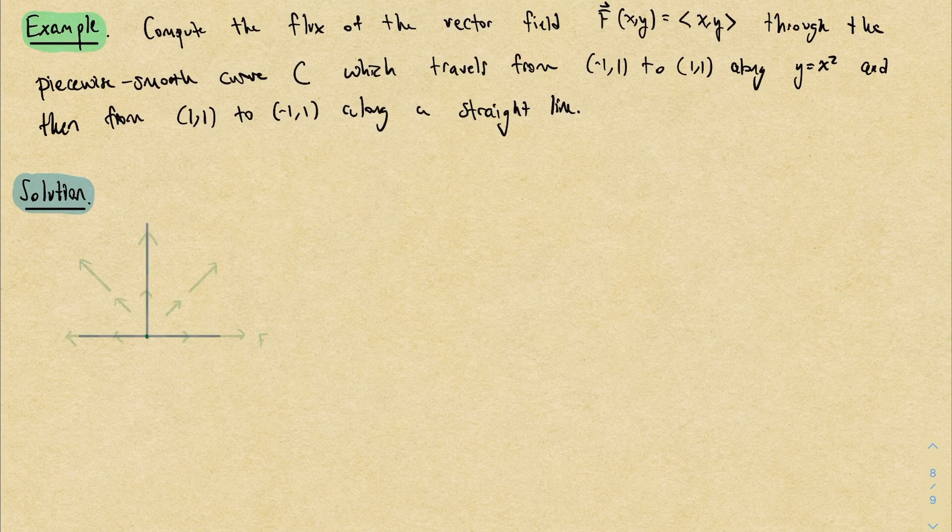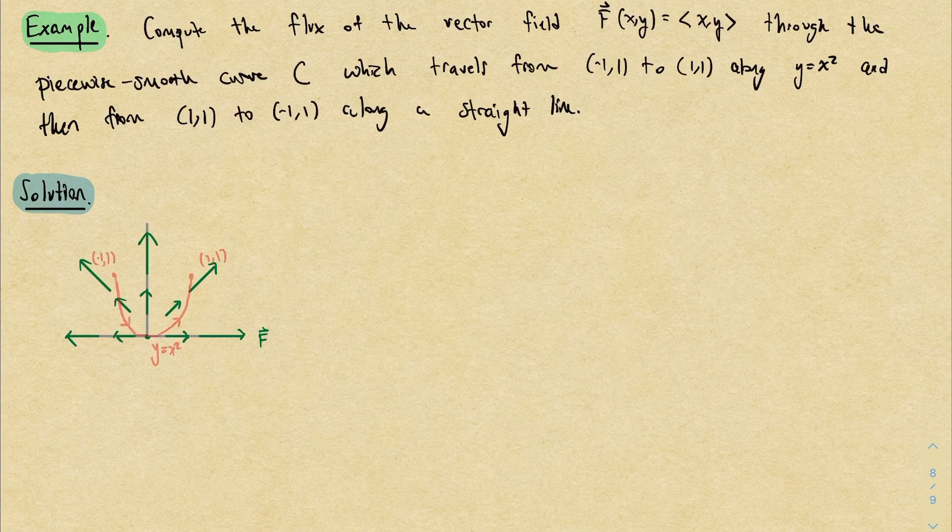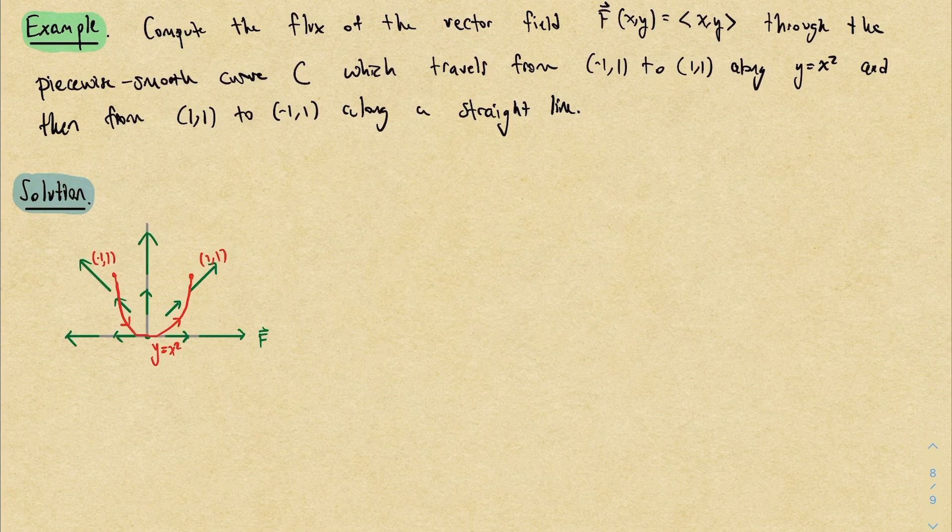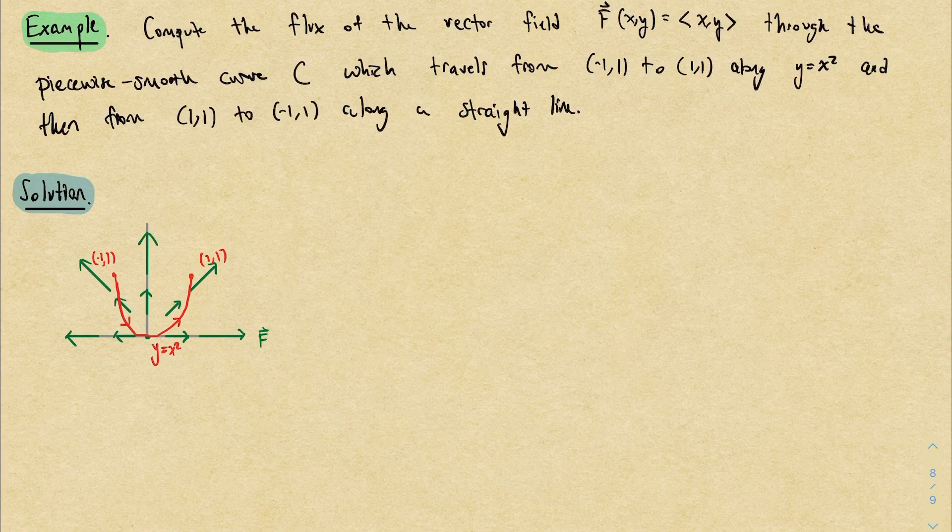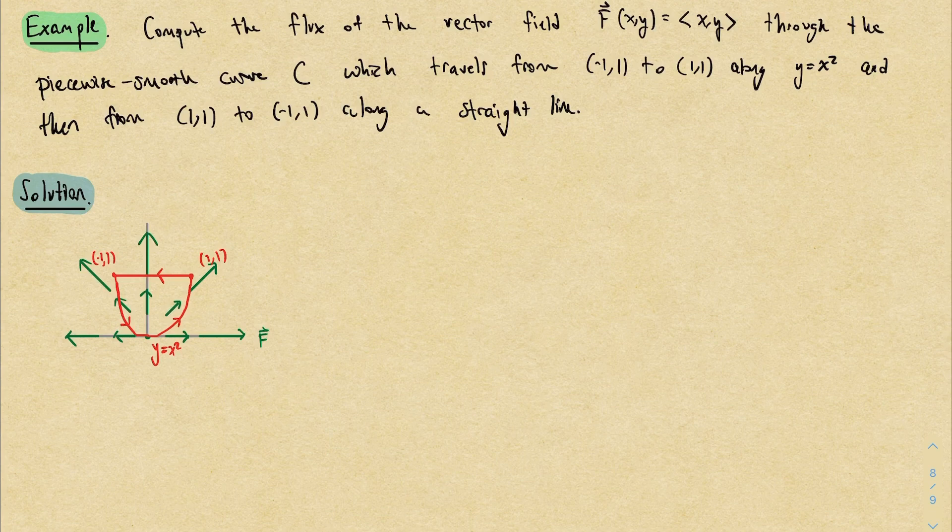Let's draw a picture. The vector field (x, y) is a radial looking vector field. It's zero at the origin, and then it points outwards everywhere else, and it gets longer as you move outwards. And then we have two portions of this curve. One of them is defined by y = x². And we're traveling from (-1,1) to (1,1), so we're going this way. And the other part of this curve is the straight line going from (1,1) to (-1,1).